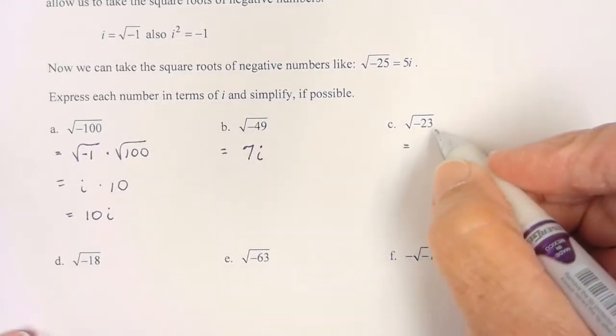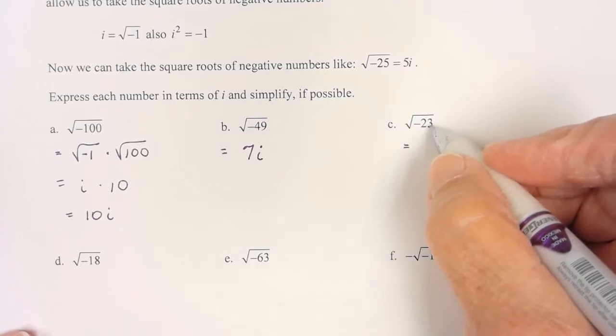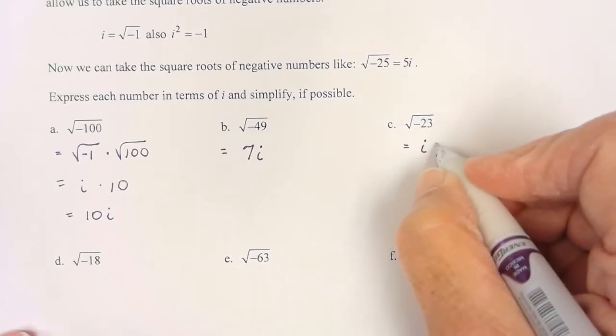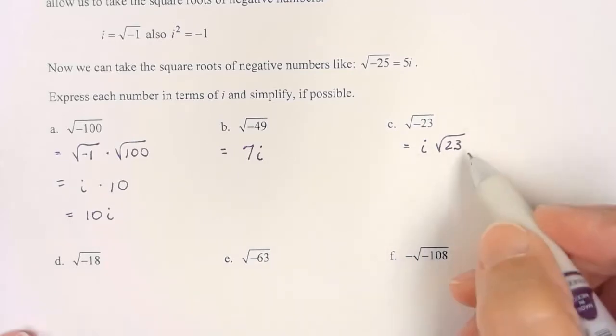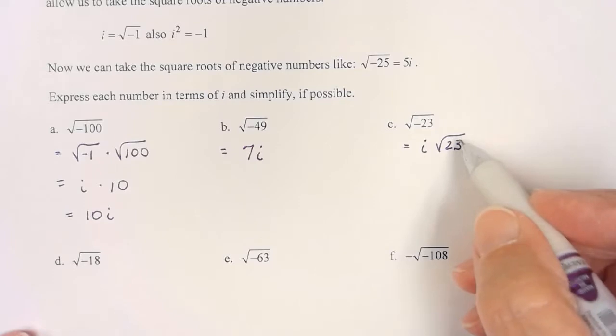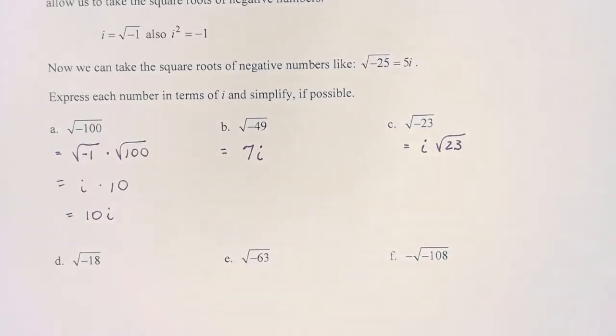So that one, 23 does not contain any perfect square factor, but it does have that negative. I'm going to pull the i out. Now if I have a radical left, the i will be written in front, because some people have trouble with square roots and they extend the radical sign too far.